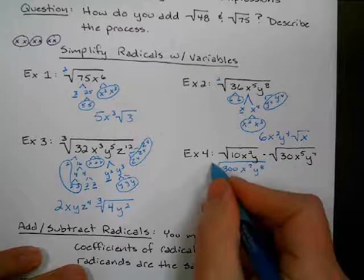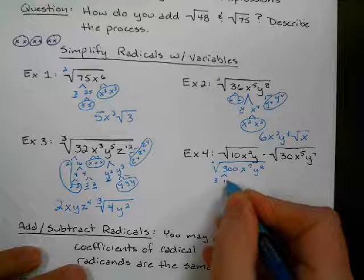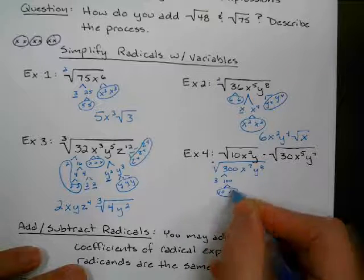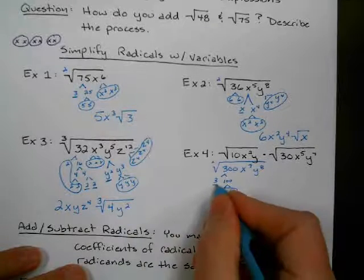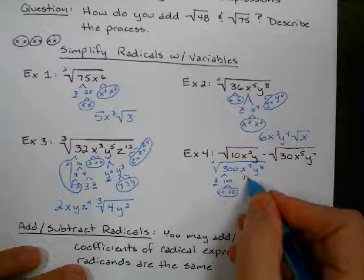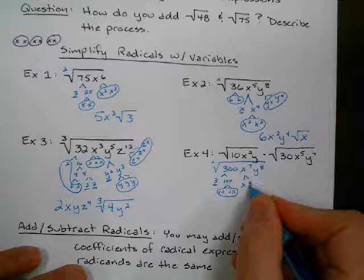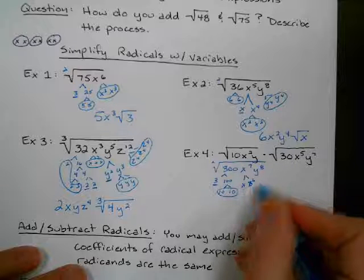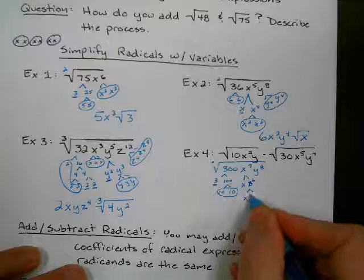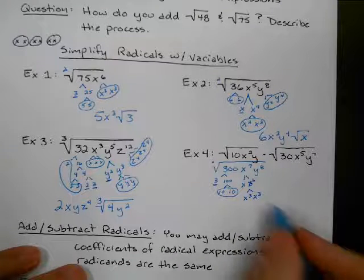So this would be 3 times 100. And 100 is 10 times 10. So there's my pair that can come out. 3 stays behind. 2 does not go into 7. So I'm going to split this one up into x and x to the sixth. So 2 does go into 6. So this is going to be x to the third and x to the third. So I got a pair of x to the thirds there.